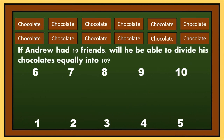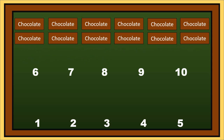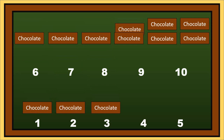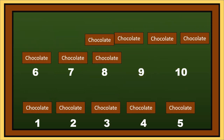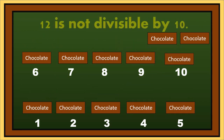Let's go back to Andrew's chocolates. If Andrew had 10 friends, will he be able to divide his chocolates equally into 10? Let's find out. 12 is not divisible by 10. How will we know if a number is divisible by 10?